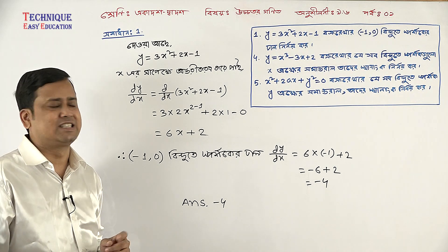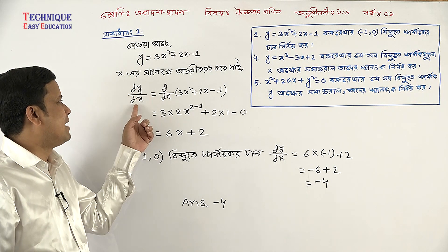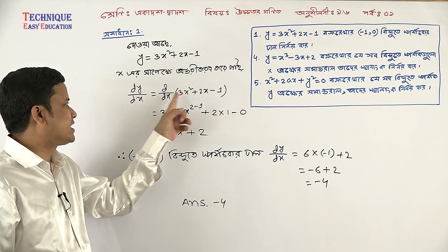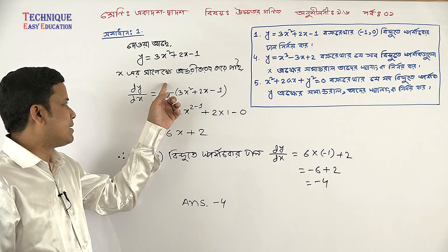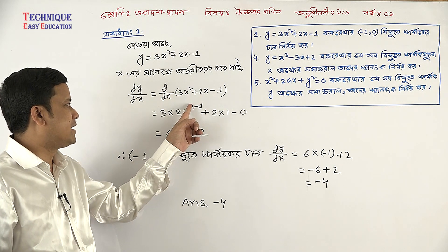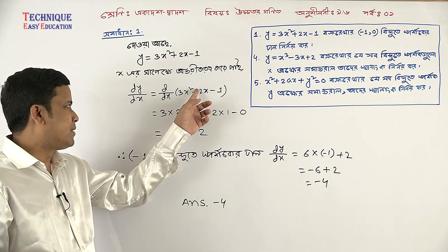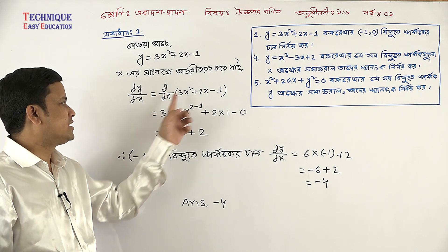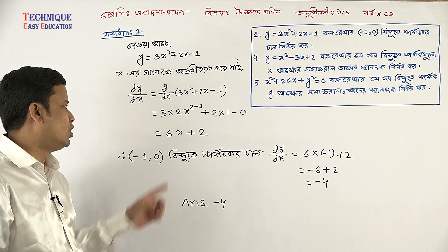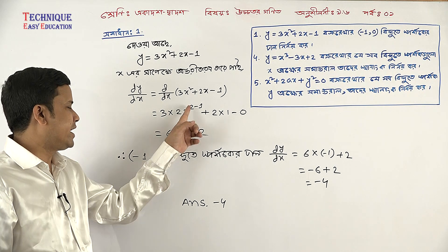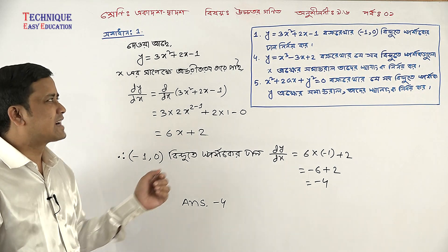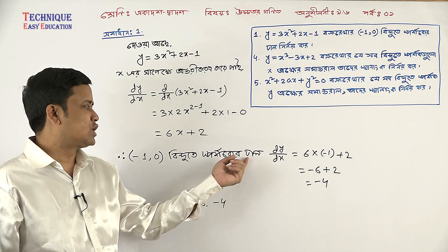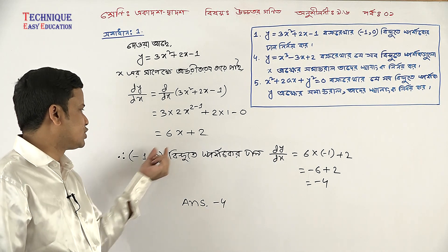So I'm going to have this example. y-এর কাল dy ভাগ dx, আর d/dx — 3 বার d/dx of x to the power n, so d/dx of xⁿ equals n·xⁿ⁻¹. Plus 2·d/dx of x, same equals 1. d/dx of 1 — constant — equals 0. So 3·2 = 6x plus 2.